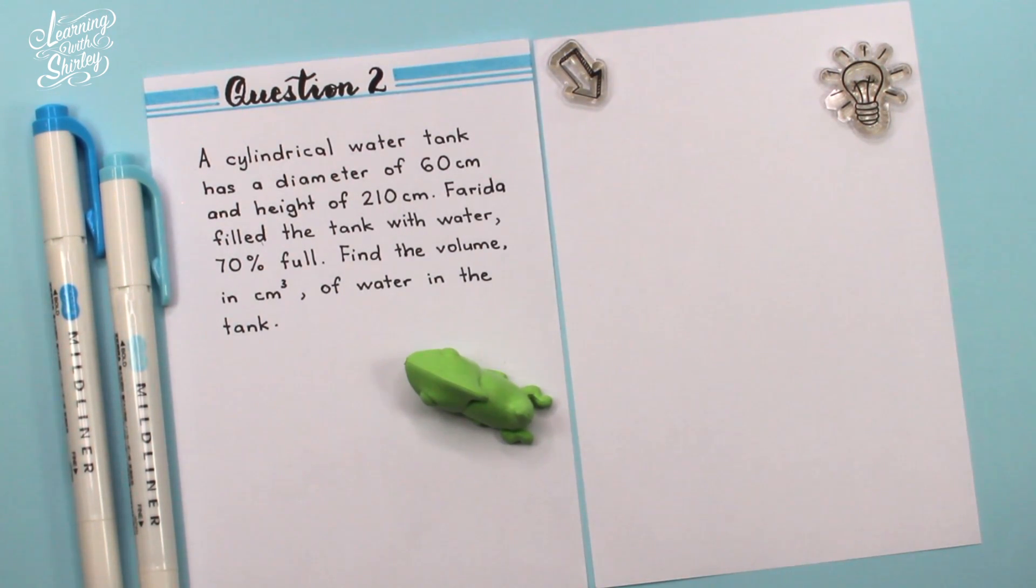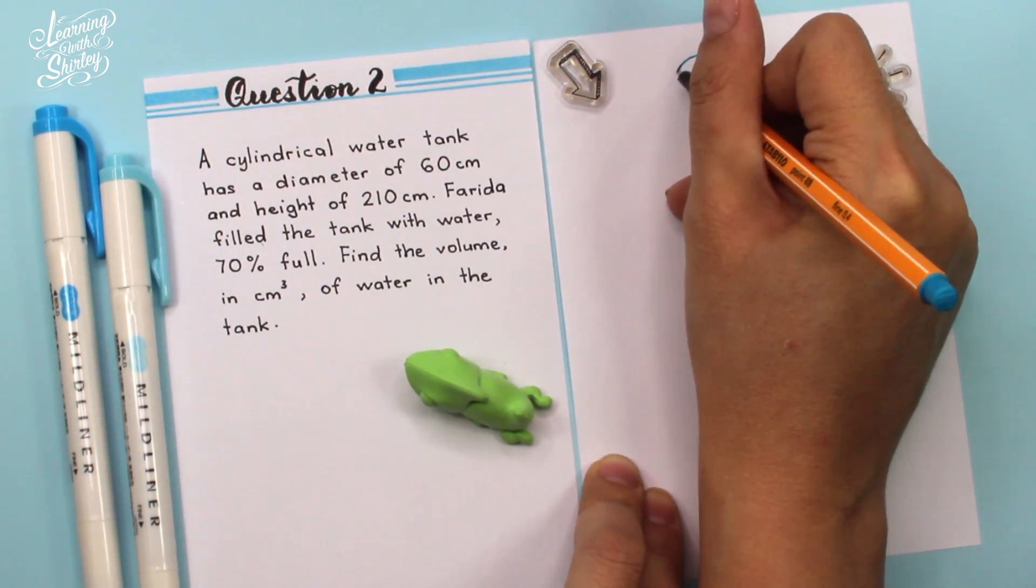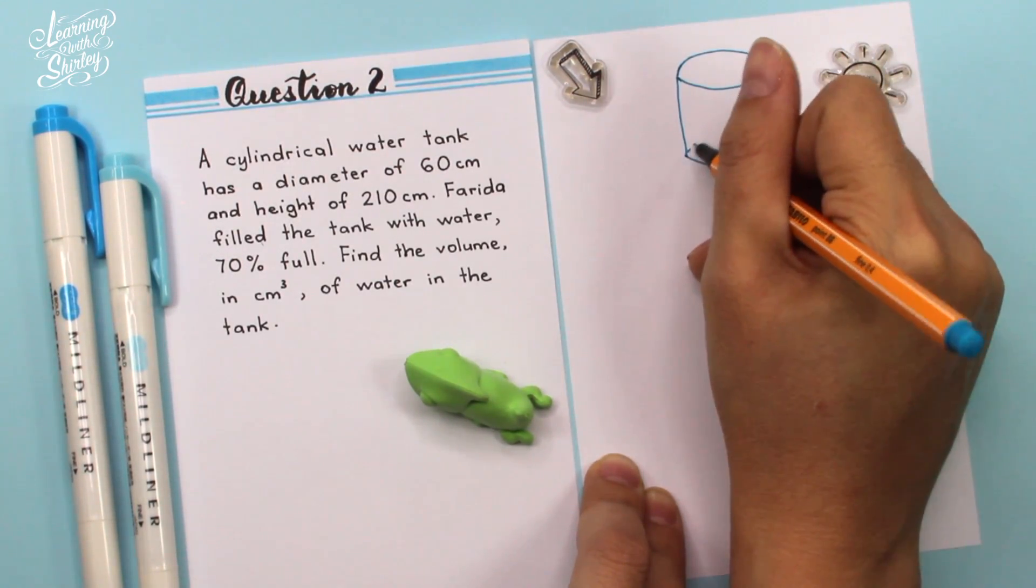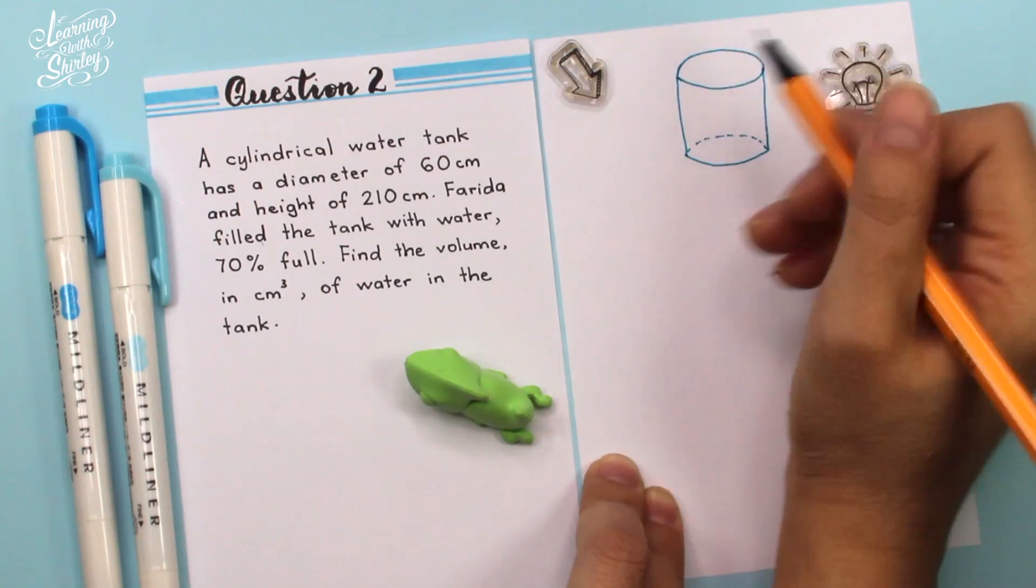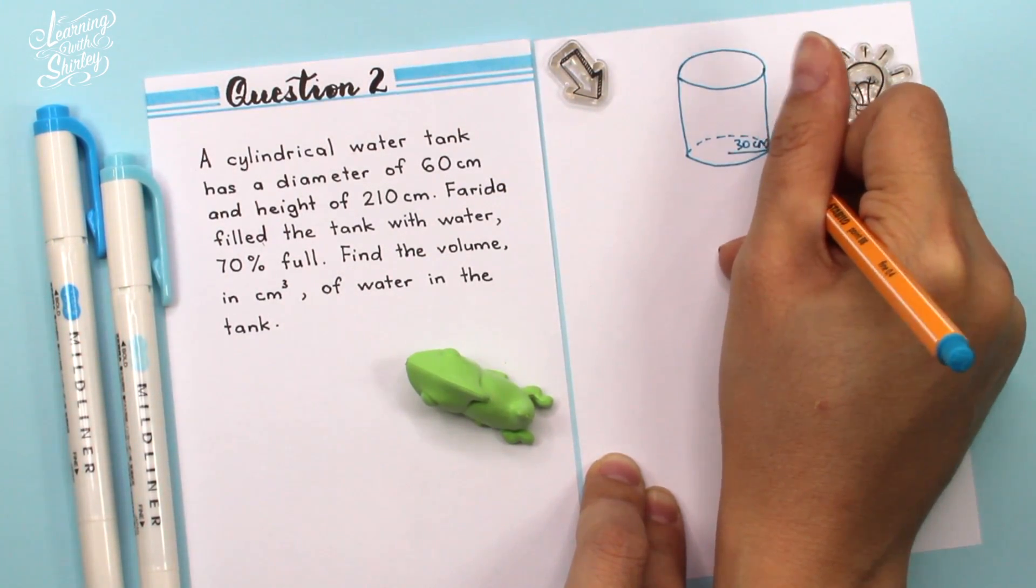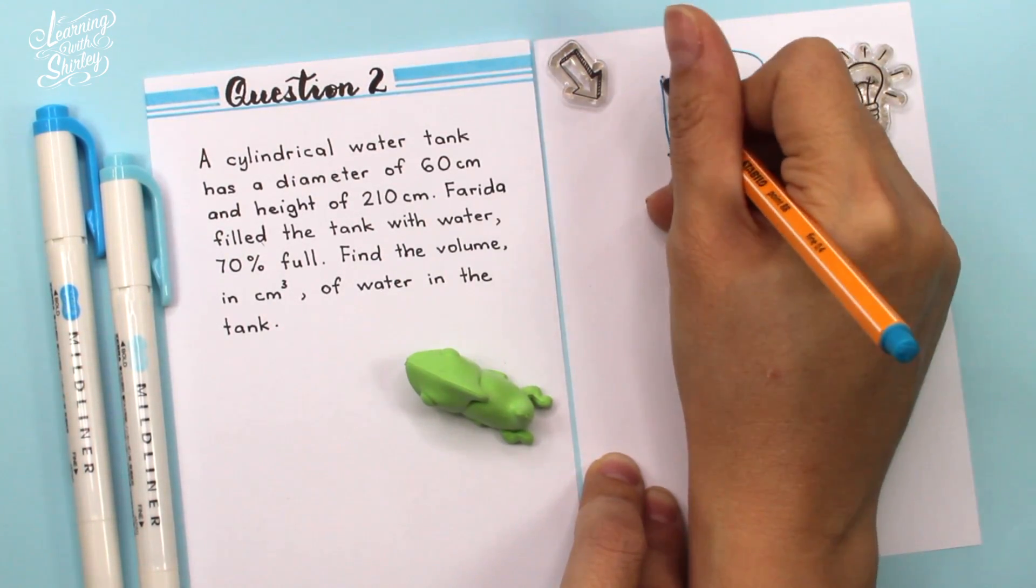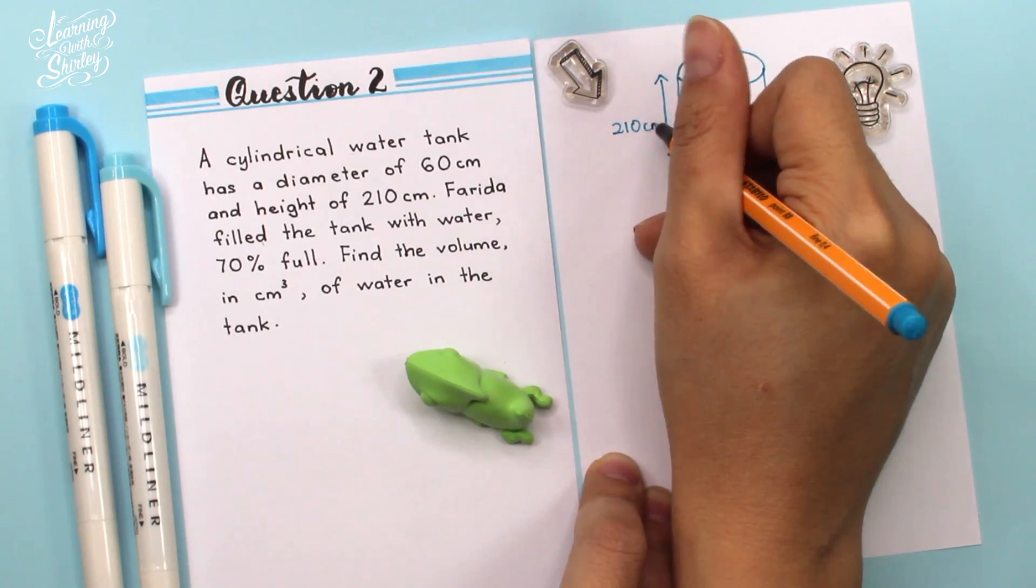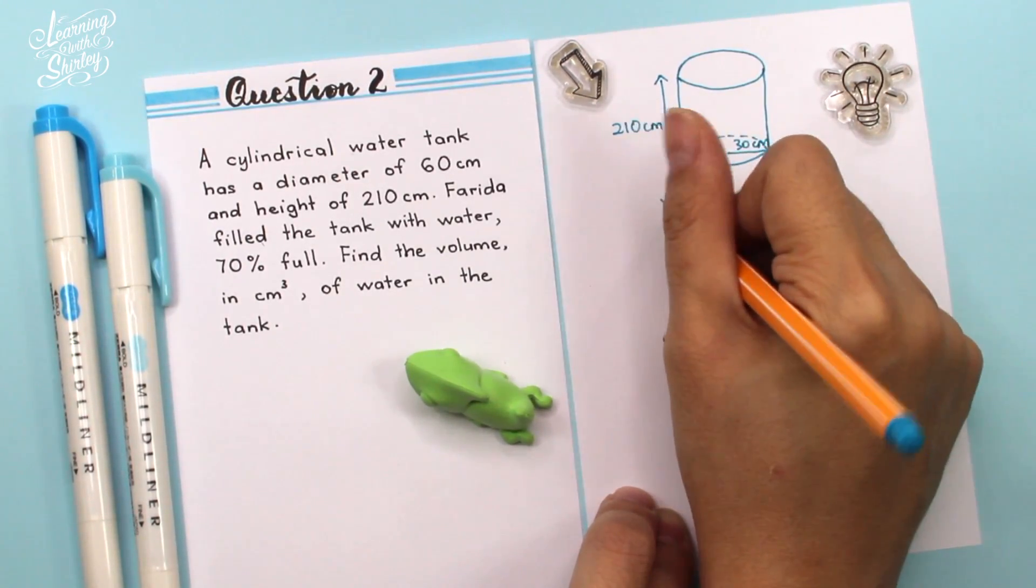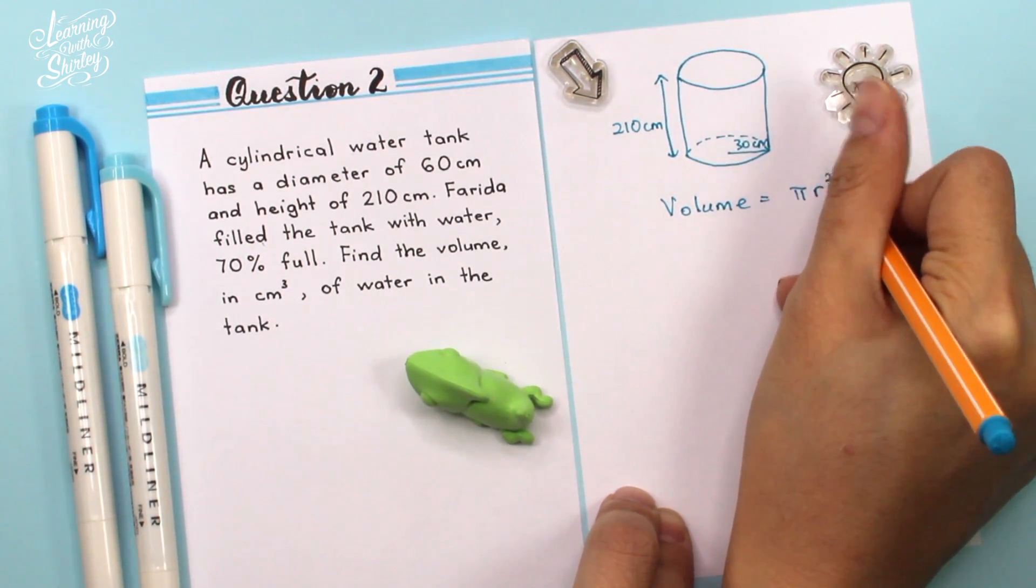To solve this question, first of all, I'm going to sketch the picture of a cylinder over here. So diameter of 60 cm means that the radius is 30 cm. You just need to divide it by 2. And then the height for the cylinder is 210 cm.